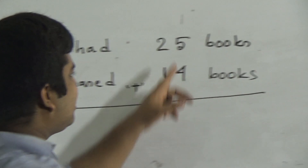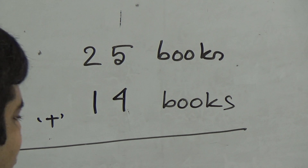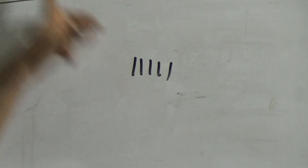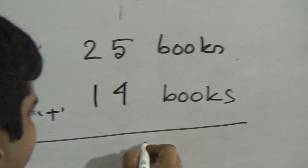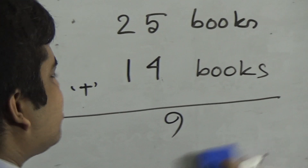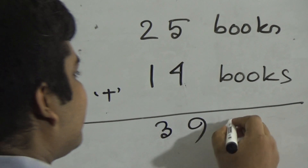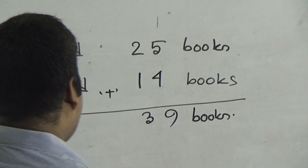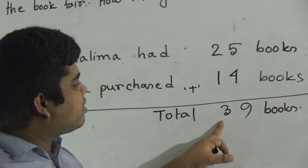Now we add the ones place: five and four. We draw five sticks and four sticks — counting all together gives us nine. So ones place is done. Next, tens place: two and one. We draw two sticks and one stick, giving us three total. So we write three. As we do addition, here we write 'total'. We add and we get 39 books.